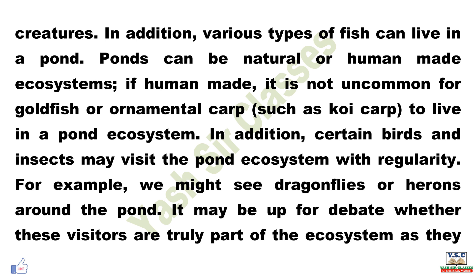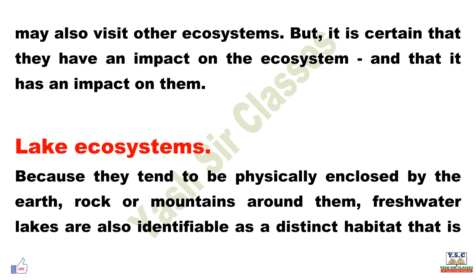In human-made ponds, it is not uncommon for goldfish or ornamental fish such as koi carp to live in the pond ecosystem. Certain birds and insects may also visit the pond ecosystem. For example, we might see dragonflies or herons around the pond. It may be up for debate whether these visitors are truly part of the ecosystem, as they may also visit other ecosystems, but it is certain that they have an impact on the ecosystem.